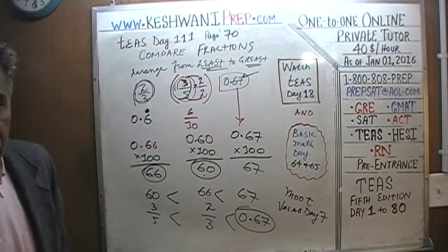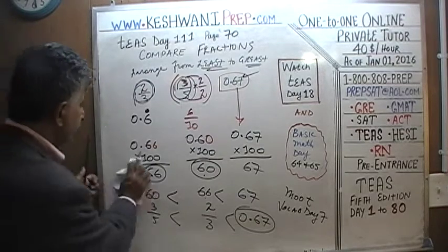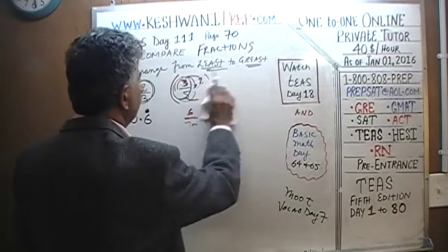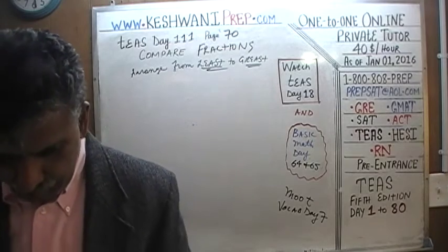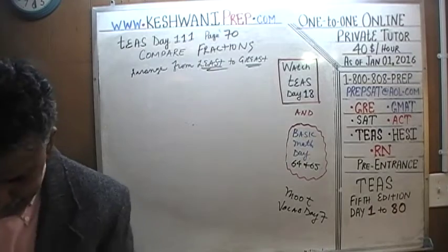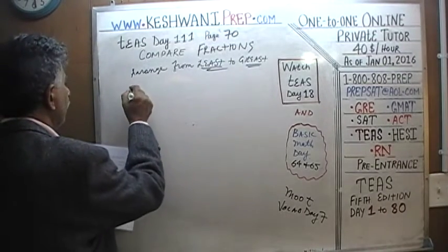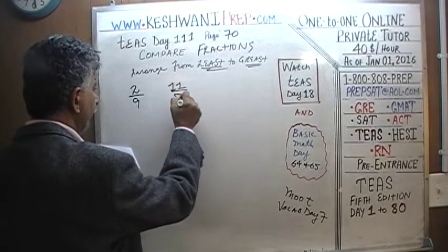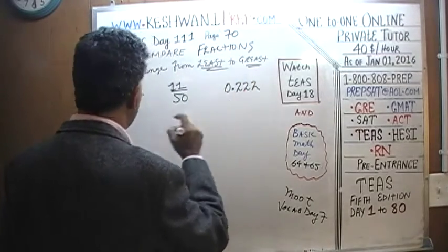Let's do one more. Again, arrange from least to greatest. We have 2/9, 11 over 50, and 0.222. It's a little tricky — not as simple.